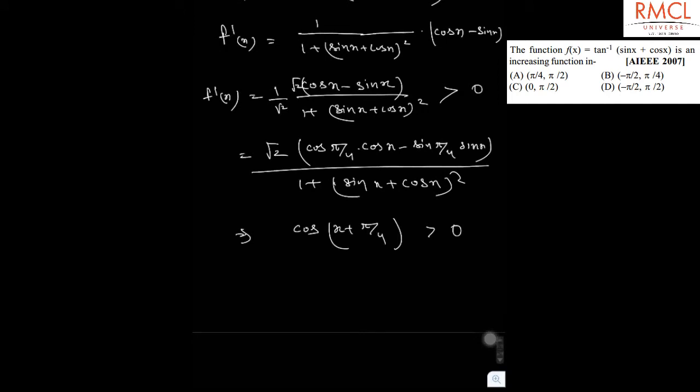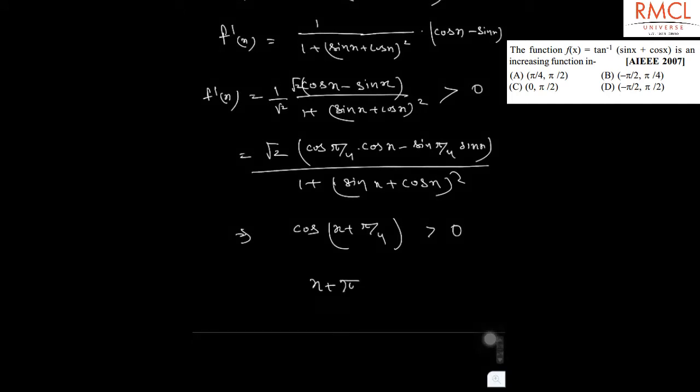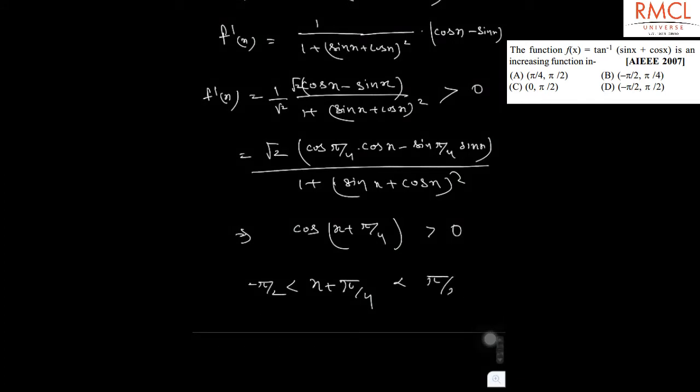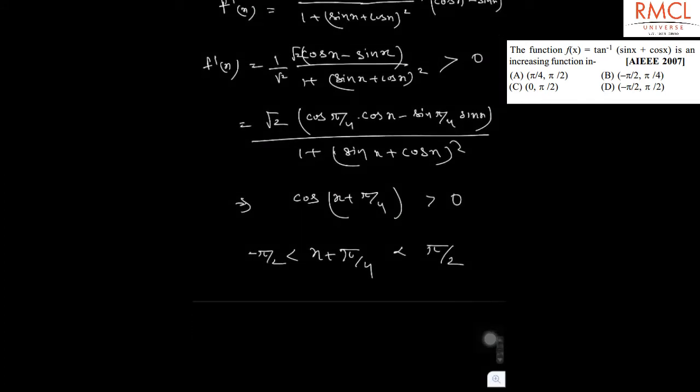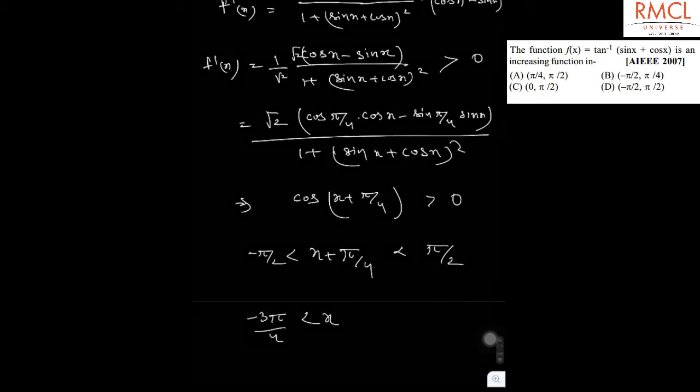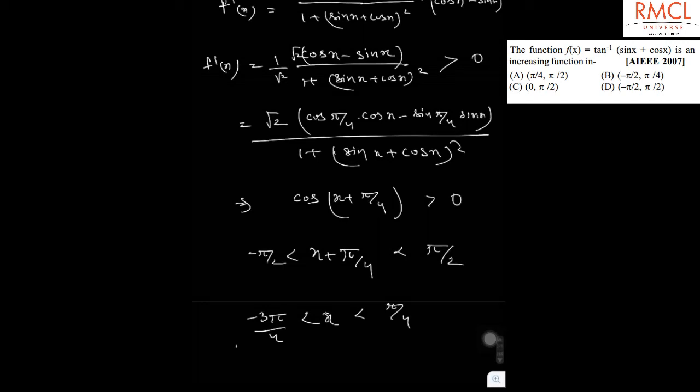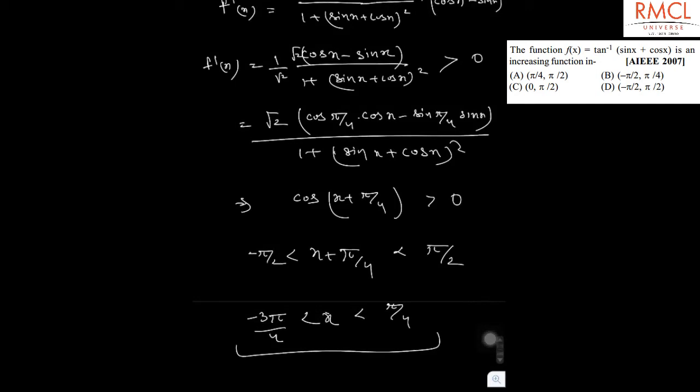So if cos(x + π/4) is greater than 0, then x + π/4 should lie in the interval of -π/2 to π/2. So x is greater than -3π/4 and less than π/4.